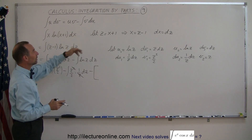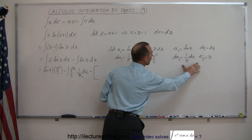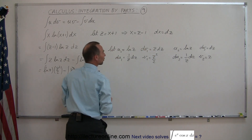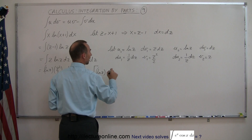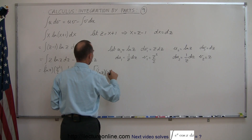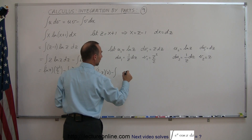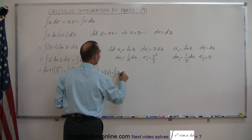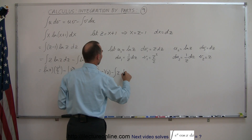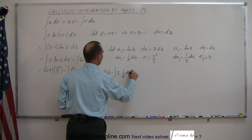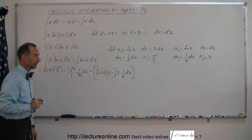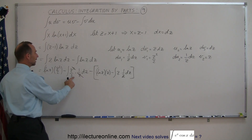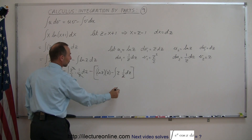Then minus the second integral, applying u2 times v2 minus the integral of v2 du2: the natural log of z times z, minus the integral of z times 1 over z dz. Now we're ready to integrate, because this simplifies to the integral of dz, and the other becomes the integral of 1 half z.